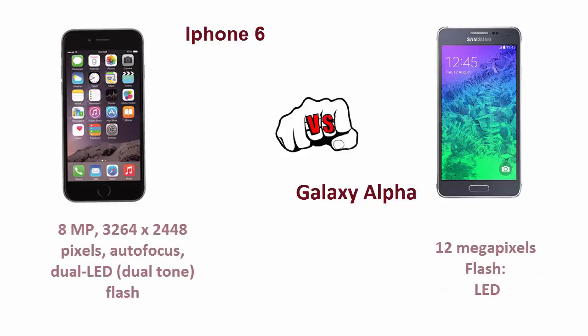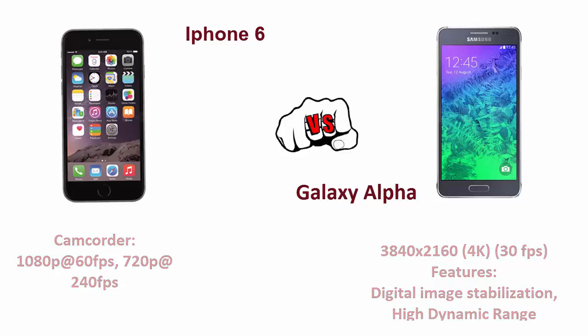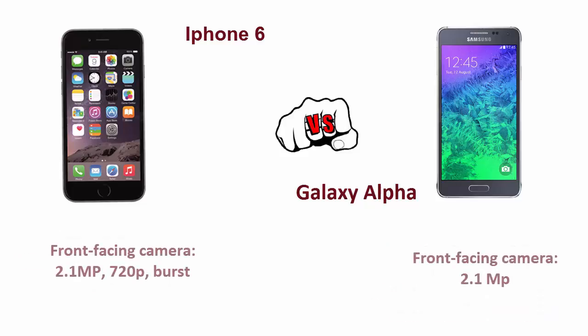The iPhone 6 has an 8 megapixel rear camera while the Galaxy Alpha has a 12 megapixel rear camera, capable of shooting 4K resolution videos, whereas the iPhone 6 is capable of shooting 1080p HD videos. Both smartphones have a 2.1 megapixel front-facing selfie camera.